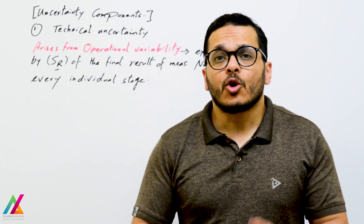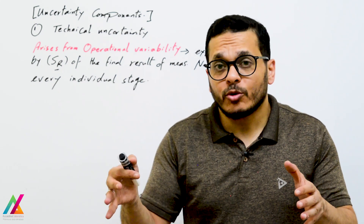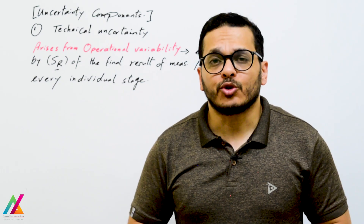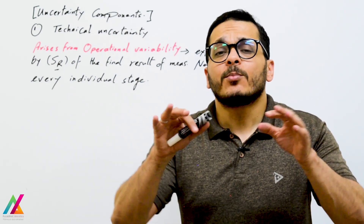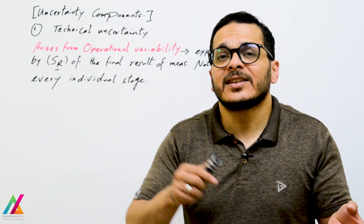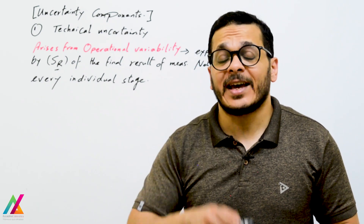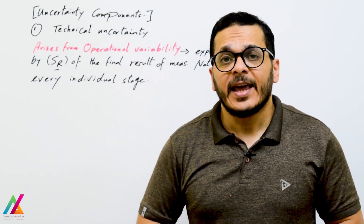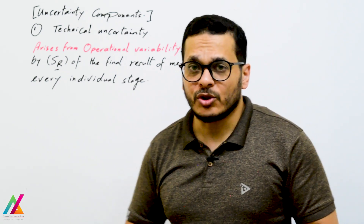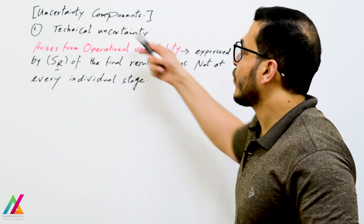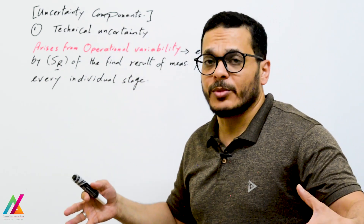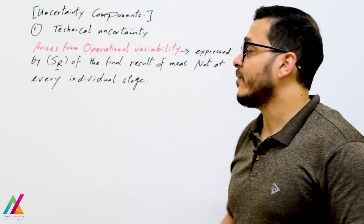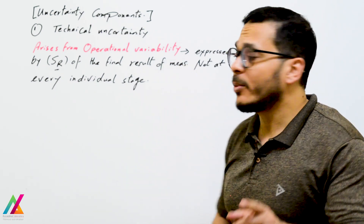The first one is technical uncertainty. As explained in the previous lecture, the contribution of each input quantity in microbiological methods cannot be easily quantified, but you can use a top-down approach to calculate uncertainty, in which most input quantities will be estimated using the standard deviation of reproducibility by replicate analysis of samples over a long time scale using different analysts on different days.